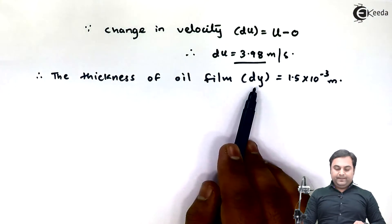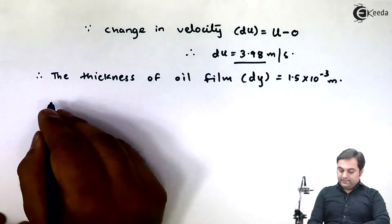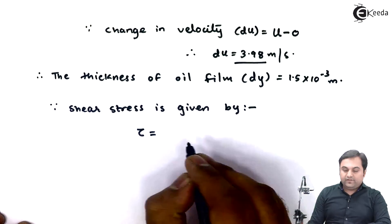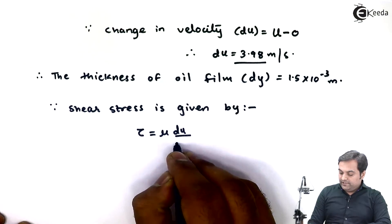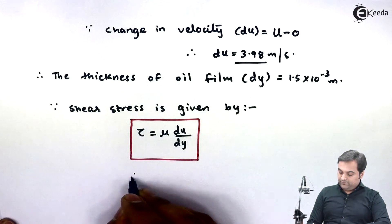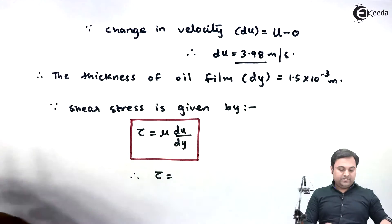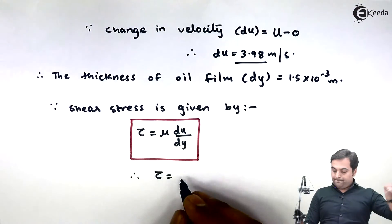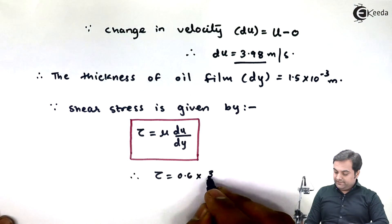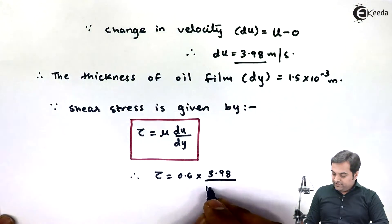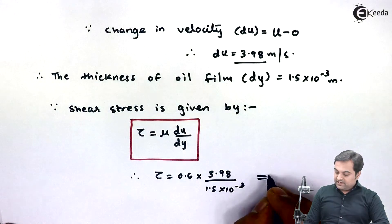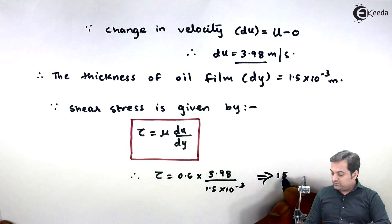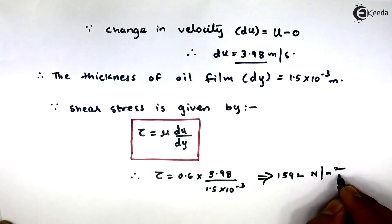Now I'll calculate shear stress using the formula τ = μ × du/dy. Substituting values: μ = 0.6 N·s/m², du = 3.98, dy = 1.5×10⁻³. This gives shear stress τ = 1592 N/m².